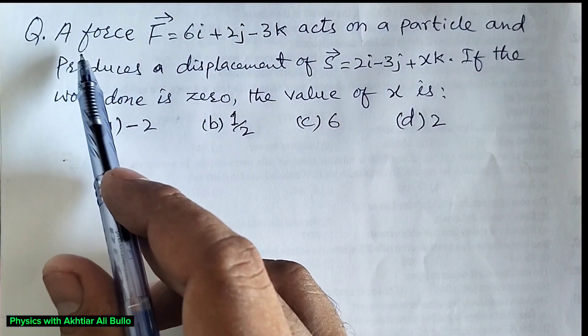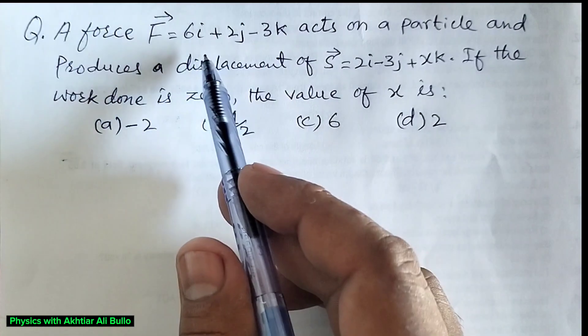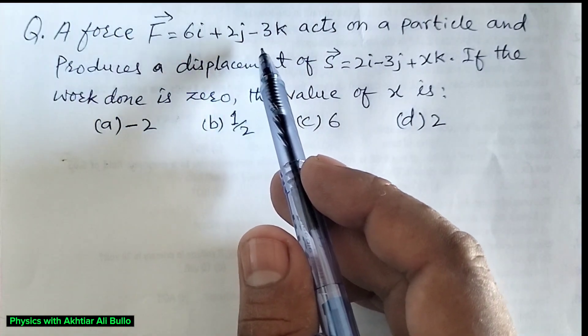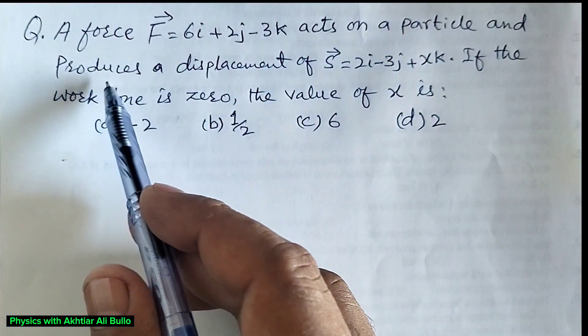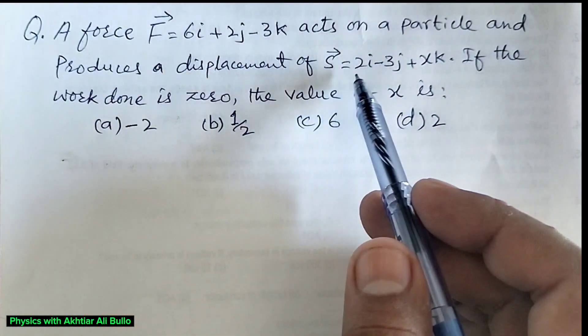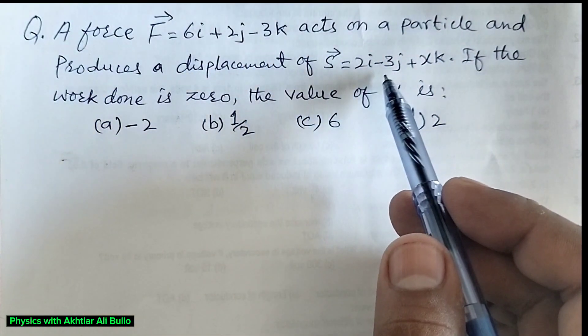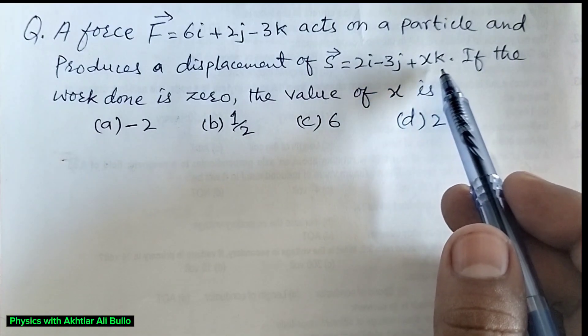The question is: a force F is equal to 6I plus 2J minus 3K acts on a particle and produces a displacement of S is equal to 2I minus 3J plus XK.